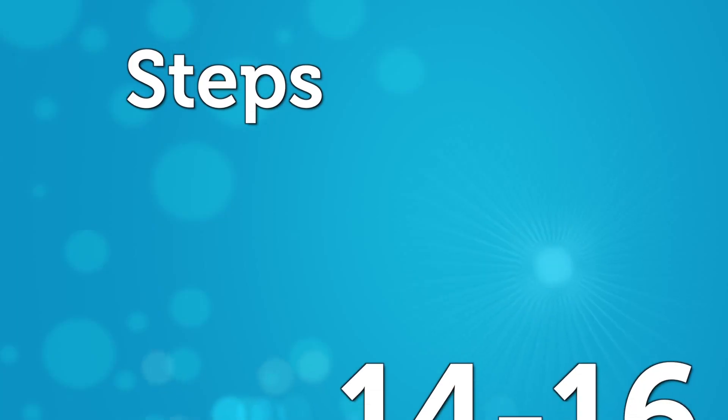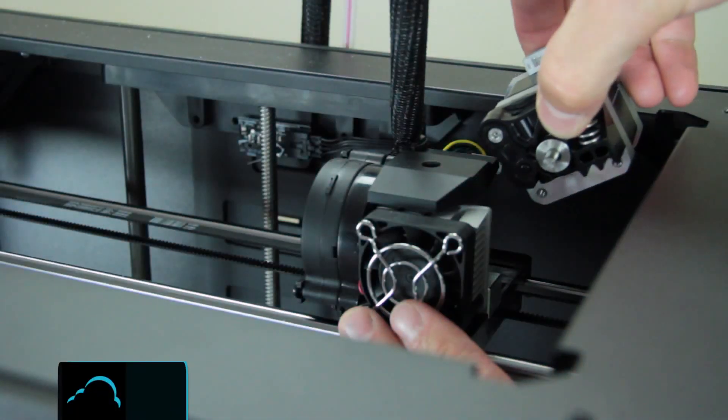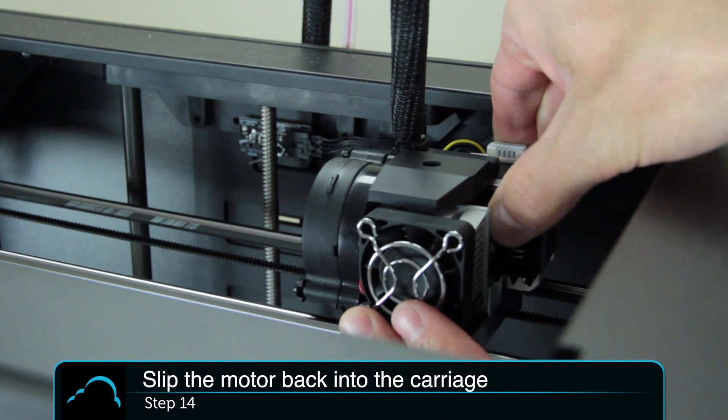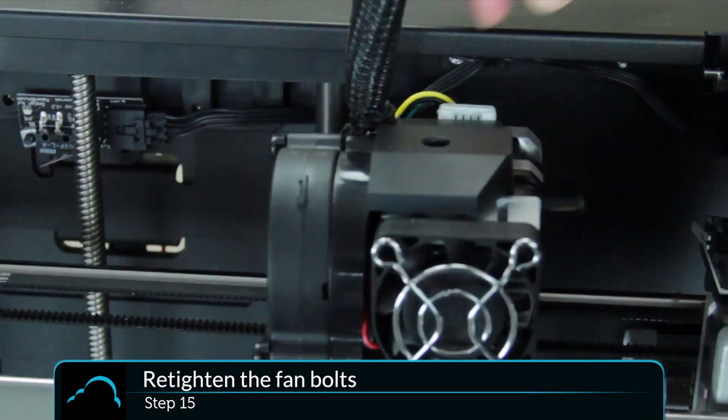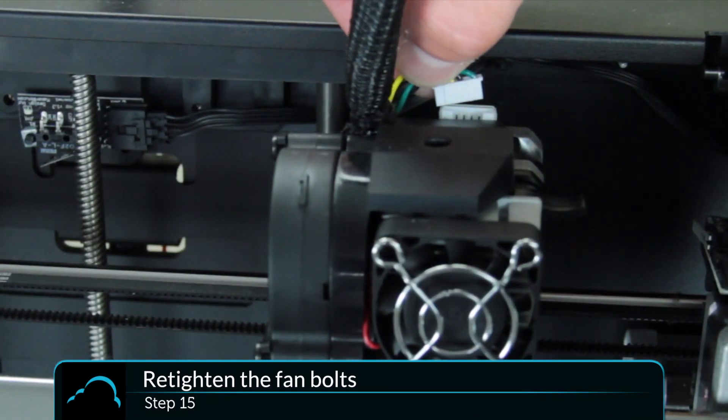Now we're going to return the motor to the Replicator 2. Slip the motor back into the carriage. We're going to re-tighten the fan bolts, and then reconnect the motor plug.